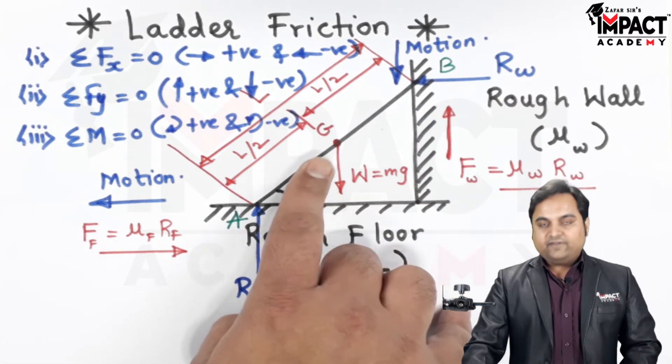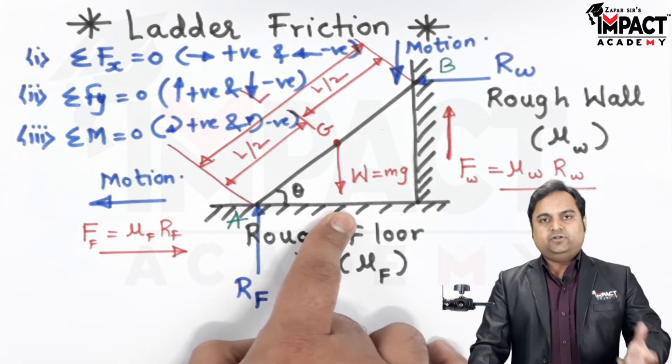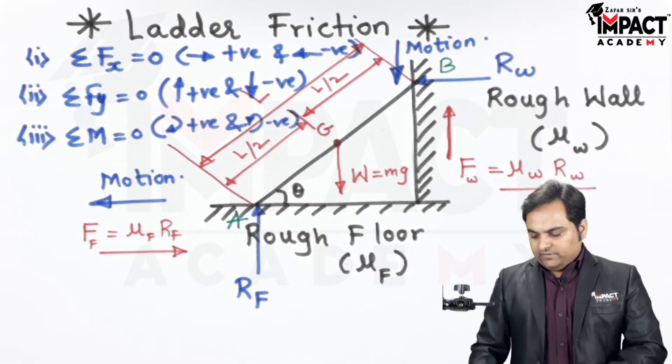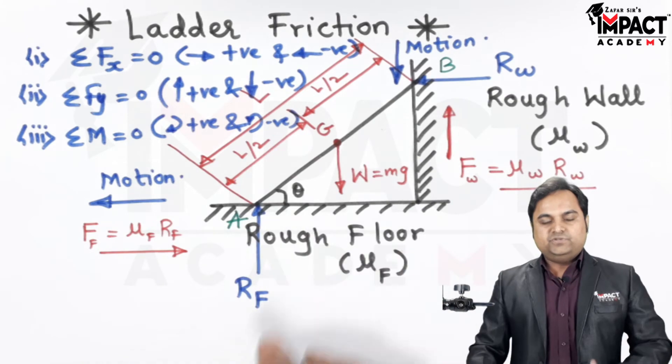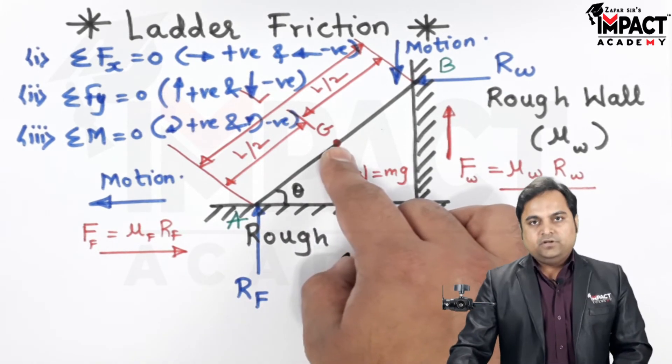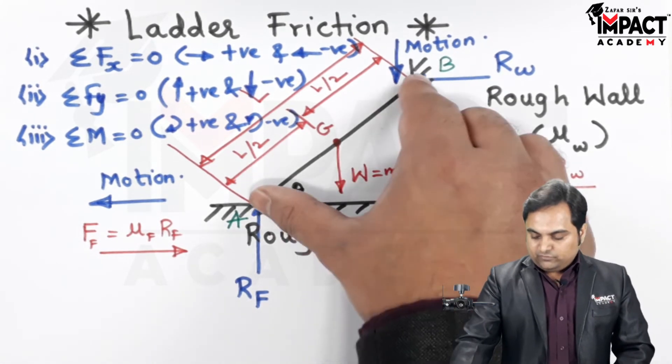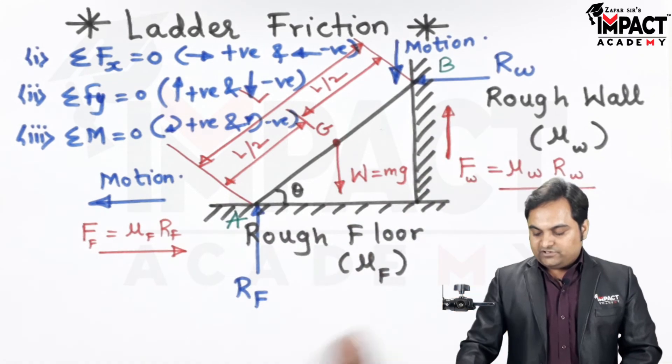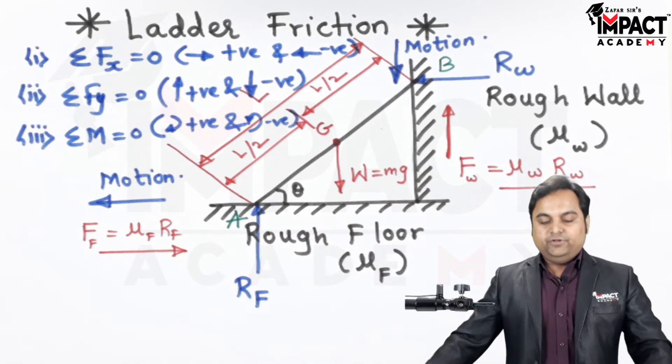And here we have to consider the weight of the ladder. If we are not considering the weight of the ladder, we have to see that if any external object or if we are trying to climb this ladder, then it would be sliding down and then the force of friction is offered. So that was a video regarding ladder friction.